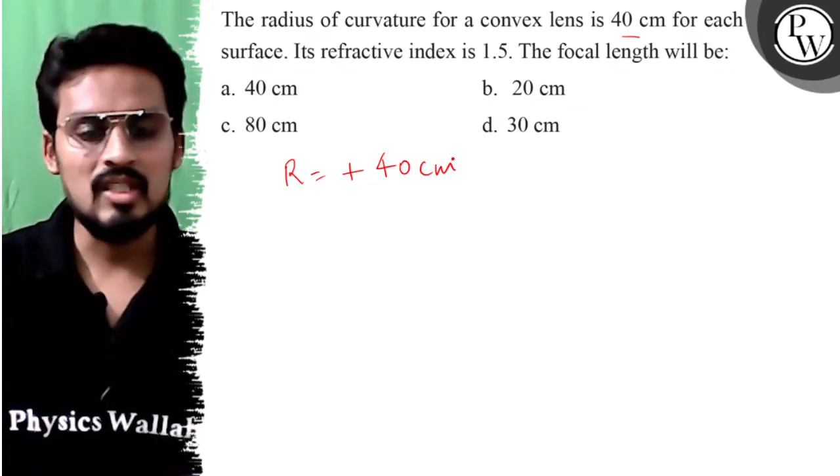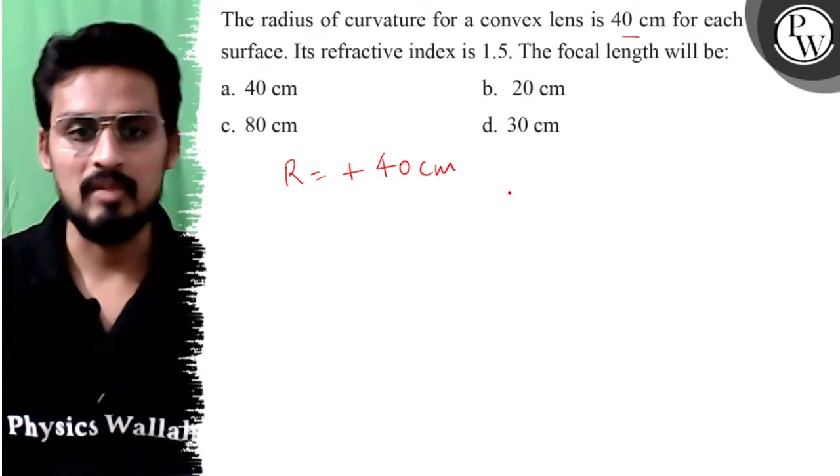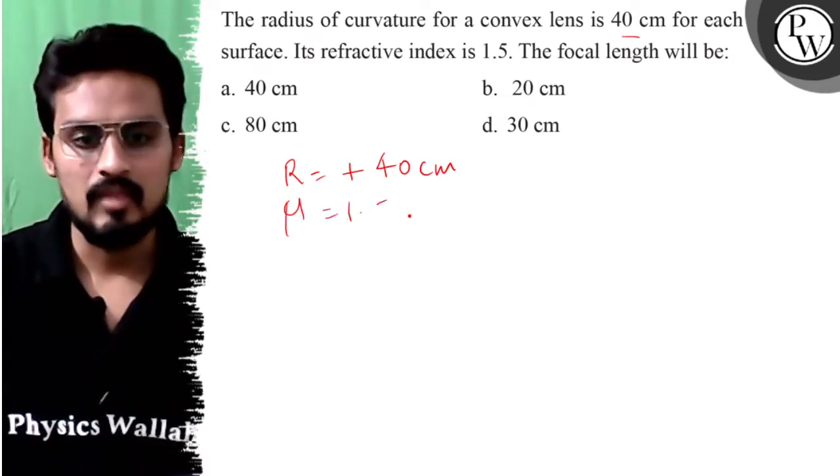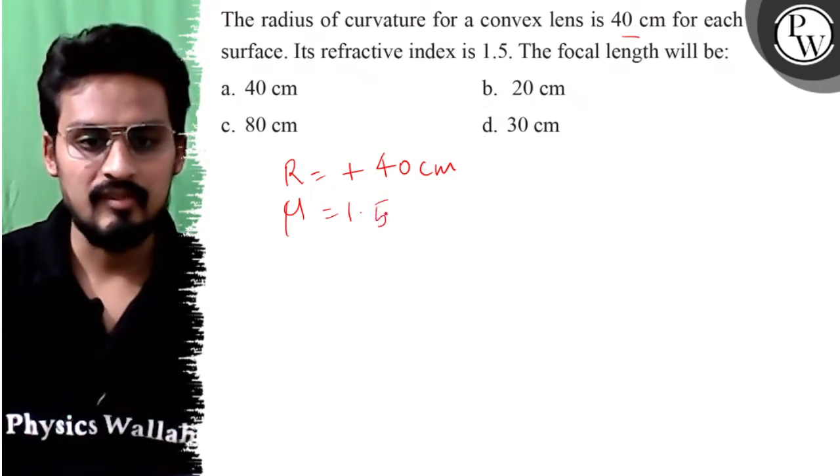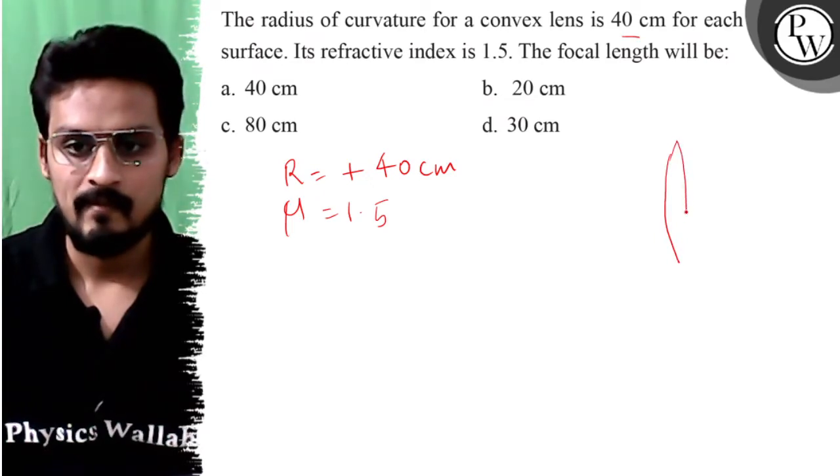For each surface, if refractive index is 1.5, the focal length will be. So hume refractive index diya rakha hai 1.5, to chalo 1.5. So chalo hai hum thoda sa jo hamaari surface ya lens ke rekhiyo.